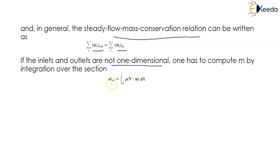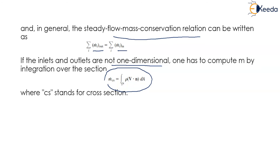For a non-one-dimensional cross section, M is equal to the integration of ρ times V dot N multiplied by dA over the cross section, where CS stands for cross section.